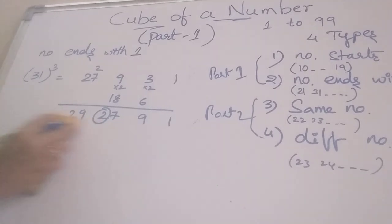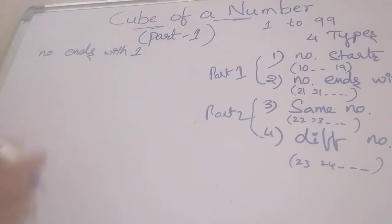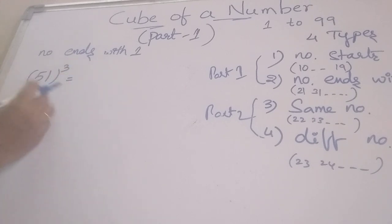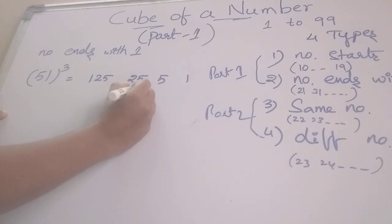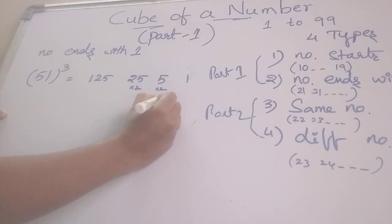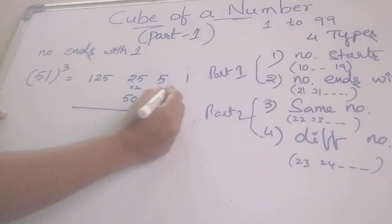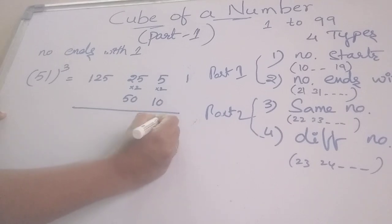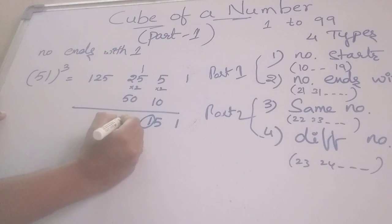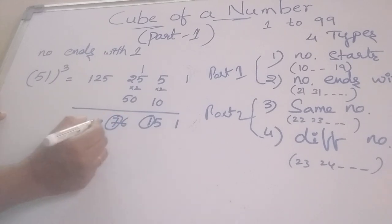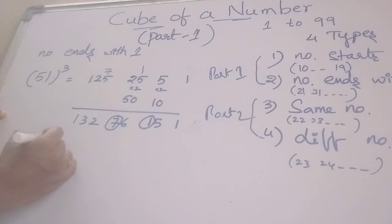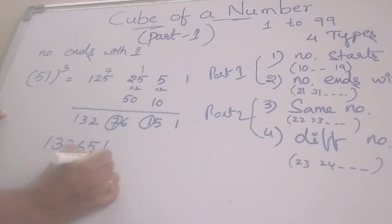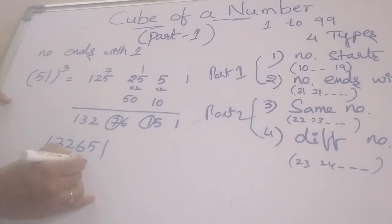Next, we take one more example: finding the cube of 51. Same process — we write to the right side: 1 and 5. What is the square of 5? 25. Cube of 5? 125. After that, 25 and 5 are multiplied by 2, giving 50 and 10. After adding all these: 1, then 15 — taking 1 as a carry — giving 76; taking 7 as a carry; that is 132. The remaining numbers are 132651. So 51 cubed is 132651. This is the answer.